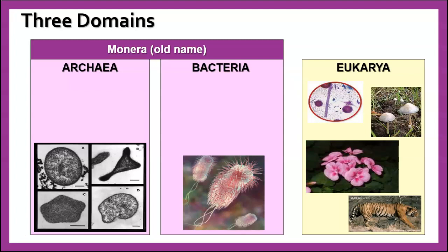We have three domains of life. We have the Archaea, and the kingdom in there is called the Archaebacteria. Then the domain Bacteria — the kingdom in that domain is called Eubacteria. And then the Eukarya, which is all the eukaryotes: the Protista, Fungi, Plants, and Animals. We'll talk about each one of these and some things about their characteristics.